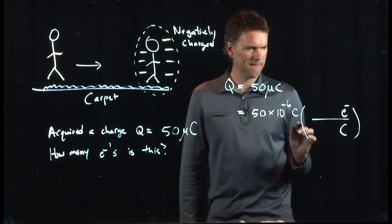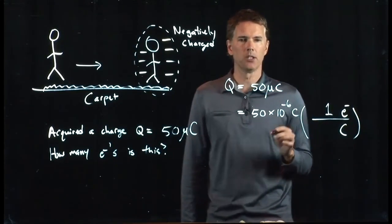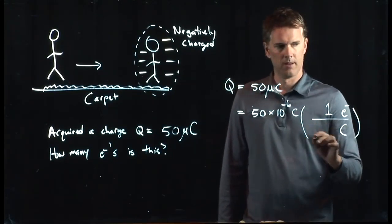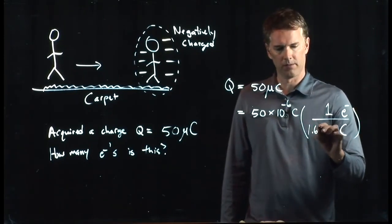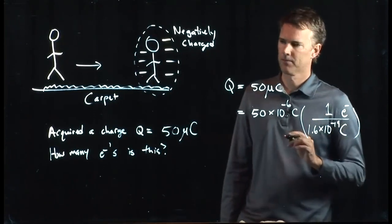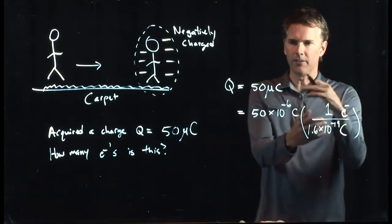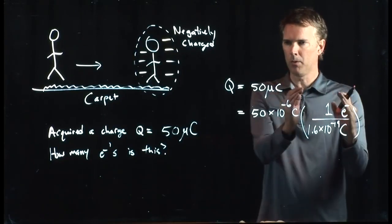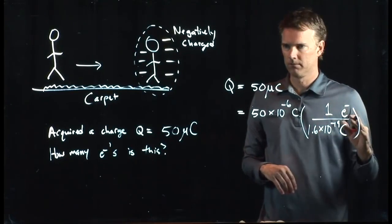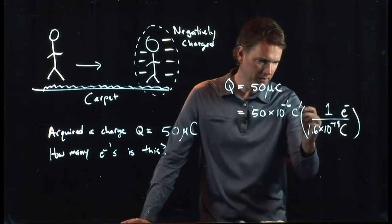And what do we know? Well, one electron has how much charge in coulombs? 1.6 times 10 to the minus 19. So this is really the number 1. It's in some funky units, but it's the number 1. One electron equals 1.6 times 10 to the minus 19 coulombs. That's it. And now we just have numbers to multiply. The units here cancel.